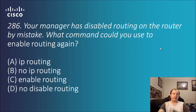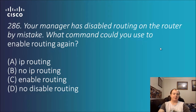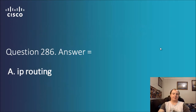Question 286: your manager has disabled routing on the router by mistake. What command could you use to enable routing again? Options: IP routing, no IP routing, enable routing, no disable routing. It's obviously not going to be B. A, C, or D would probably be most likely. D is a little tricky logic. The answer is A, IP routing.